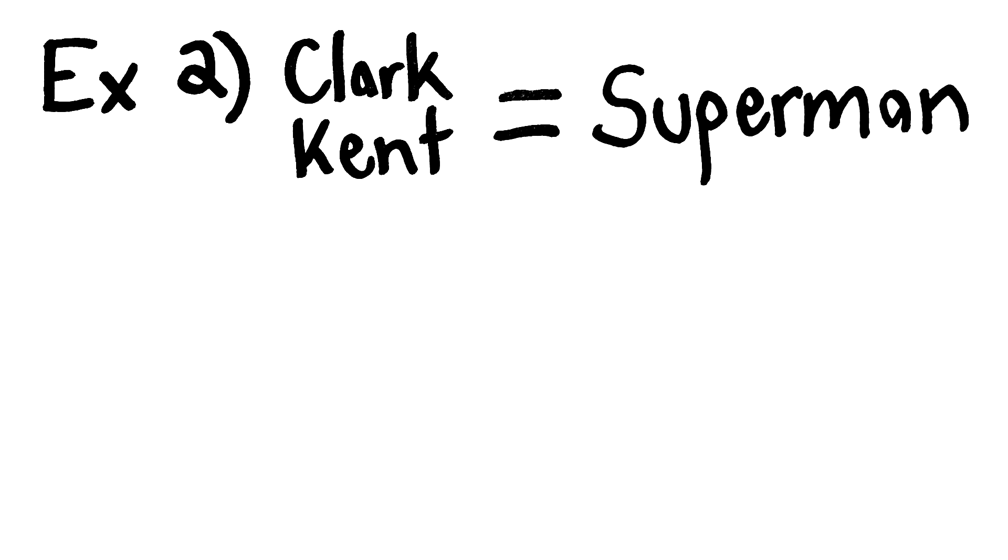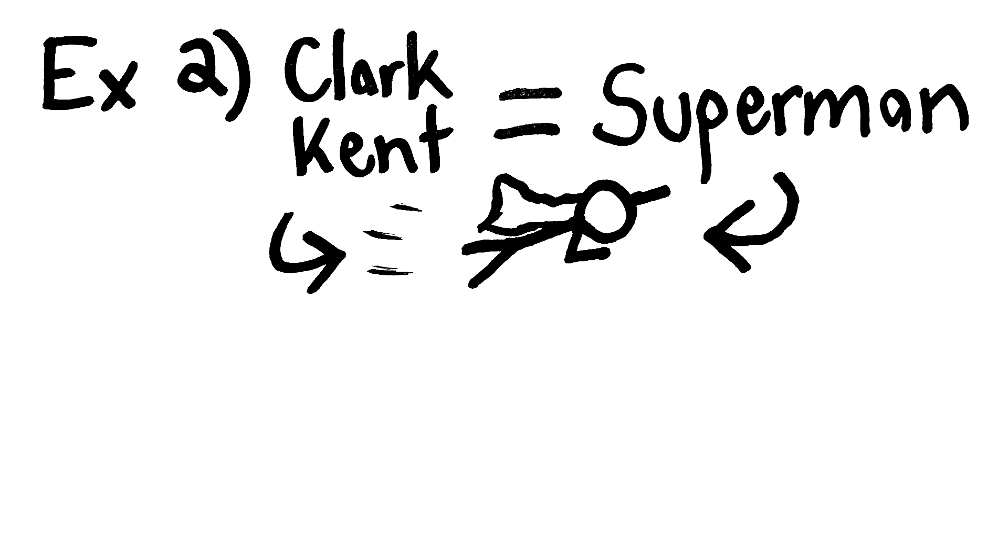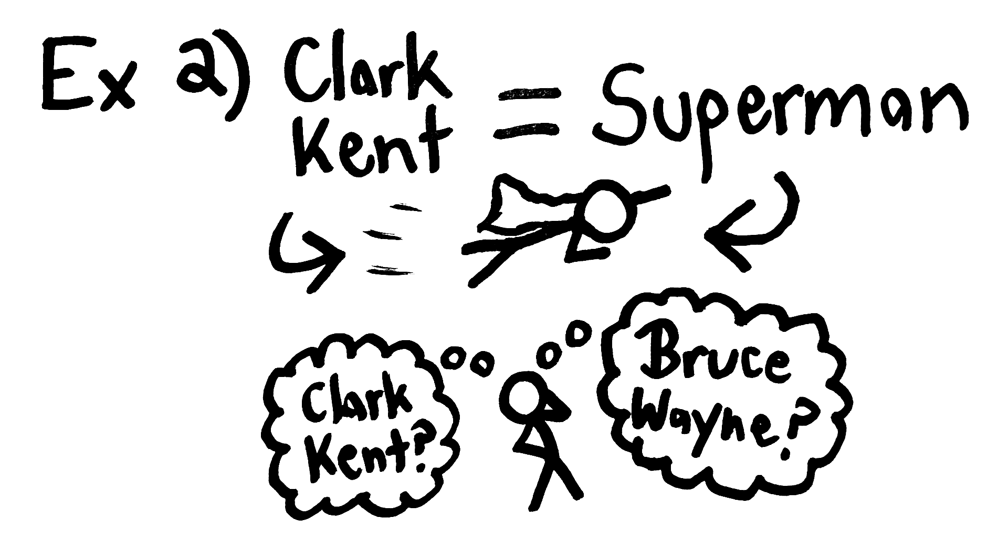Clark Kent is identical to Superman. They are the same person. But if someone doesn't know Superman's secret identity, then it's epistemically possible that Superman is identical to Clark Kent, and it's epistemically possible that Superman is identical to Bruce Wayne.